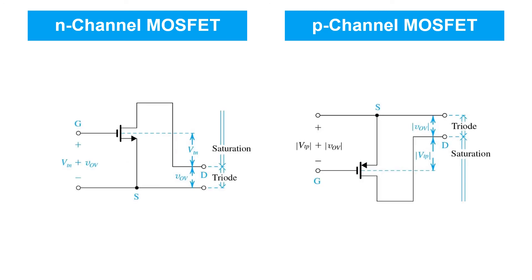Here we have schematic diagrams to remind us of the terminal voltages that give rise to the various modes of operation of the NMOS and PMOS transistors. For the NMOS transistor, the gate source voltage has to exceed the threshold voltage by an overdrive voltage in order to turn it on. Having done so, the transistor will either be in triode or in saturation depending on the drain source voltage — in triode if VDS is less than VOV, and in saturation if it's more than VOV. For the PMOS transistor, the gate has to be below the source by an amount equal to the absolute value of the threshold voltage. The threshold voltage for a normal enhancement mode PMOS device is negative, but we can talk about absolute values to keep things simple.